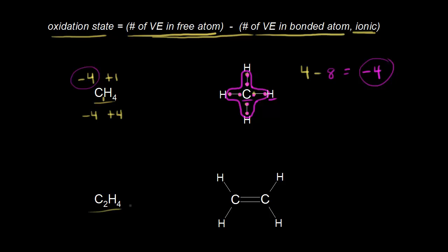Let's move on to C₂H₄, which is ethene or ethylene. Hydrogen should be plus one, and we have four of them for a total of plus four. The total for carbon should be minus four, because the sum must equal zero. But this time we have two carbons, so minus four divided by two gives us minus two — each carbon should have an oxidation state of minus two.